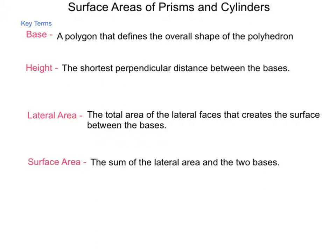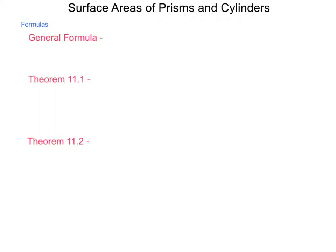As we begin working with these, we're going to have some formulas to help us define and create these different areas. The general formula for prisms and cylinders is: surface area equals two times the base area plus lateral area.